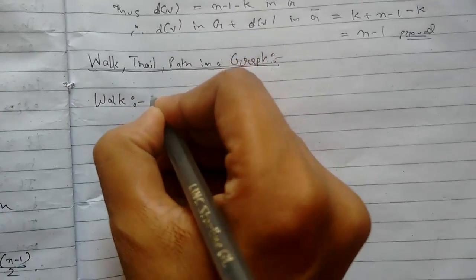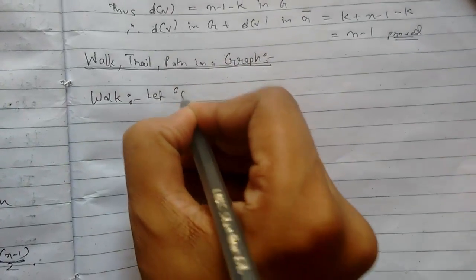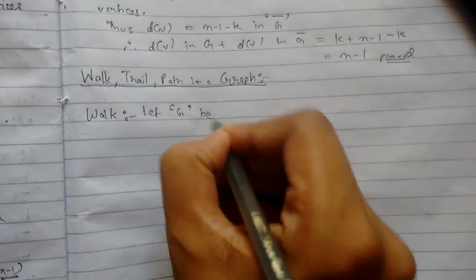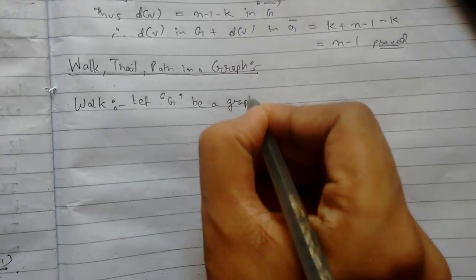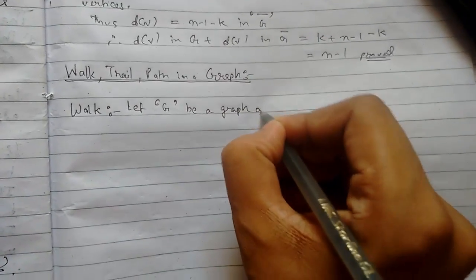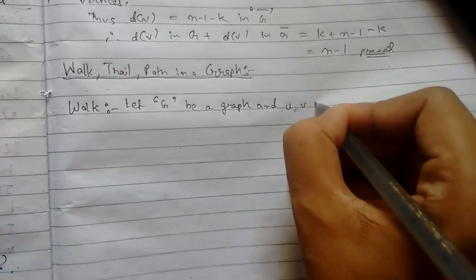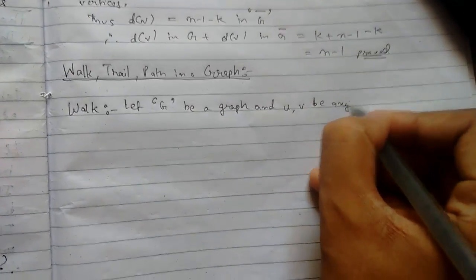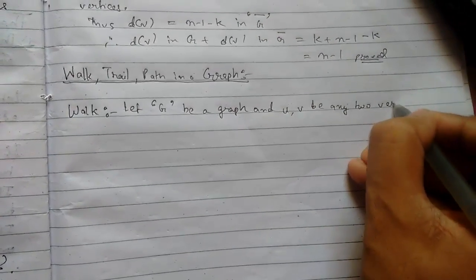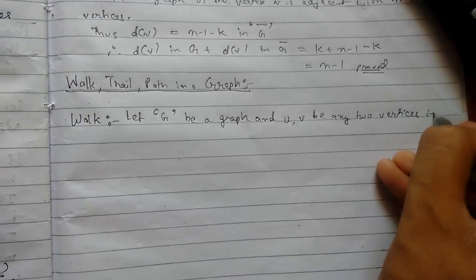First, we will learn the definition of walk. Let G be a graph and u, v be any two vertices in G.